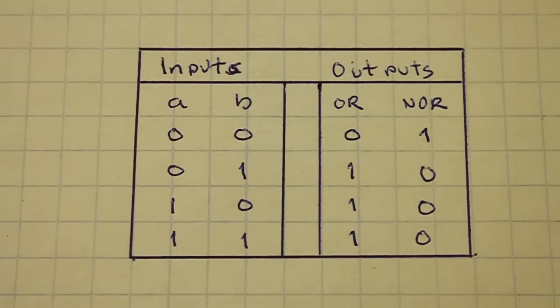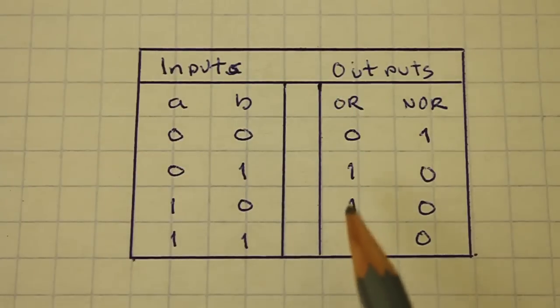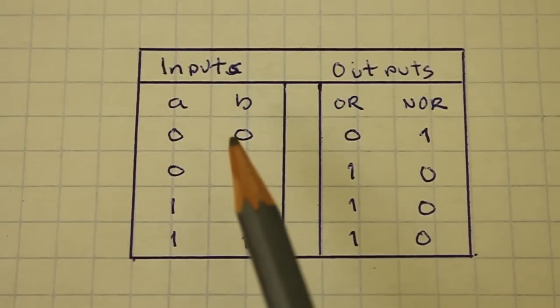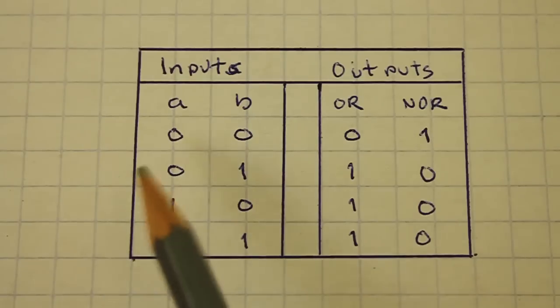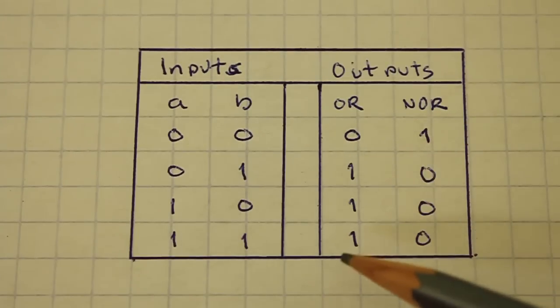As you can see for the OR gate, if both inputs are zero, the output is also zero. And if any of the inputs or both are one, the output is one.